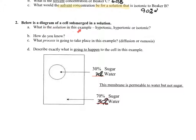So we already identified the solution is hypertonic. Why? Because it's 70% solute outside, and that is the high. When the solute concentration is high outside, it's hypertonic. The next question: how do you know? It's high solute outside, low inside.